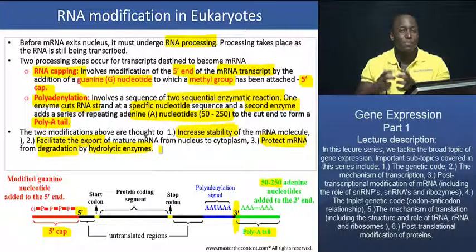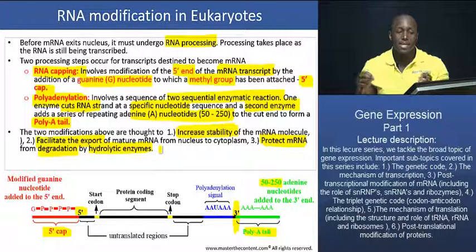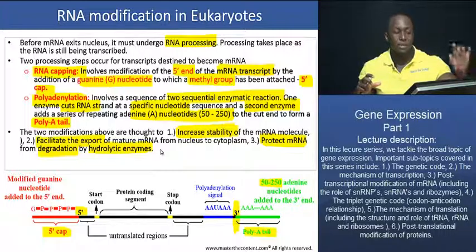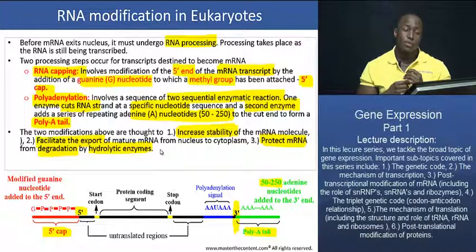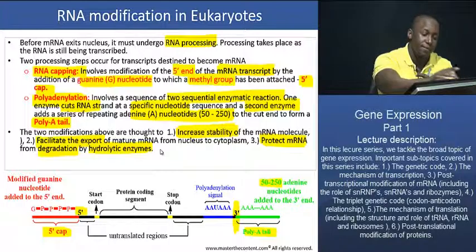Because mRNA carries very specific instructions — each nucleotide triplet dictates one amino acid — you need that information to remain untampered with in its initially formed state. Nothing should distort that sequence. So modifications such as RNA capping and polyadenylation perform that protective and stabilizing function.